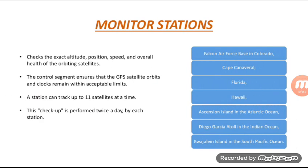Monitor Stations check the exact altitude, position, speed, and overall health of orbiting satellites. The control segment ensures that GPS satellite orbits and clocks remain within acceptable limits. A station can track up to 11 satellites at a time, and this checkup is performed twice a day by each station.